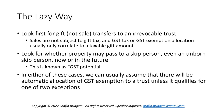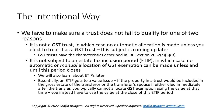In either of these cases, we can usually assume that there will be automatic allocation of GST exemption to that trust unless it qualifies for one of two exceptions. For one, we have to make sure that the trust in question is a GST trust, which most trusts now drafted will be. It's more rare to run into a situation where an irrevocable trust being funded during life is not a GST trust. But if it's not a GST trust, the consequence is that you lose this automatic allocation.